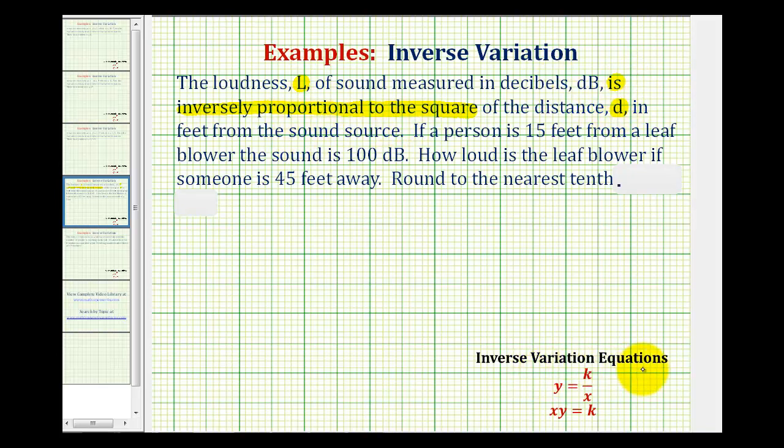The basic inverse variation equation is y equals k divided by x, where k is the variation constant. But this is for the most basic example, when we have y is inversely proportional to x. But here we have L is inversely proportional to the square of d.